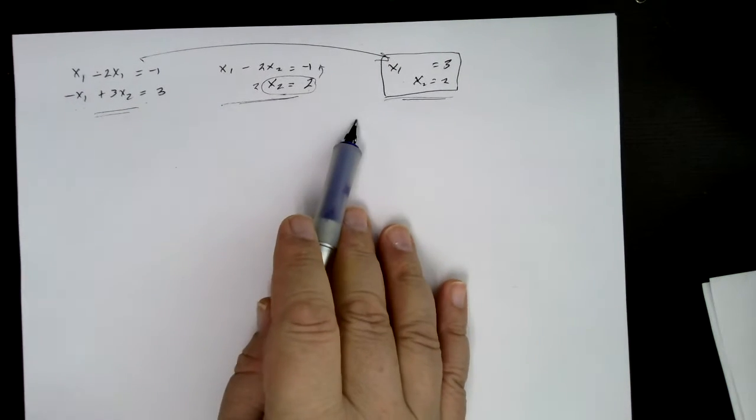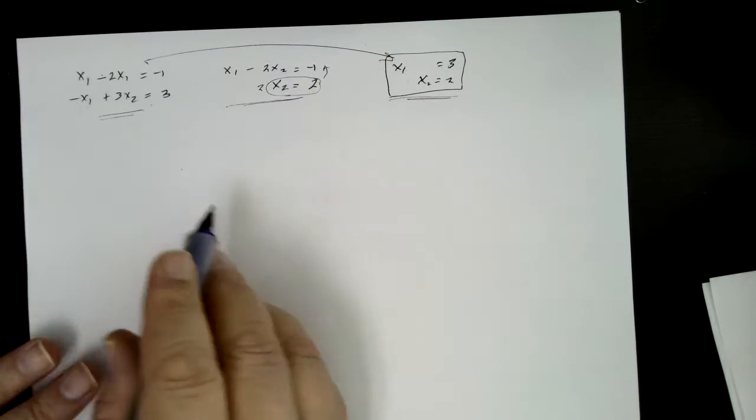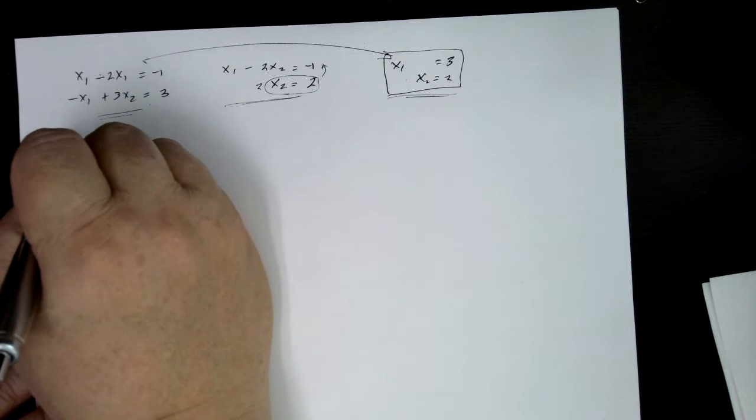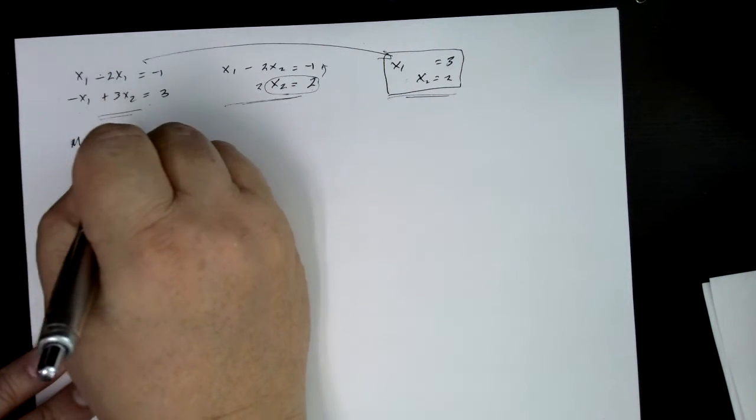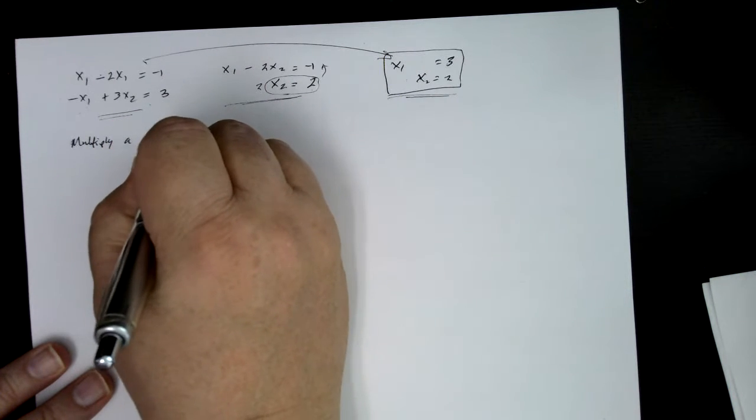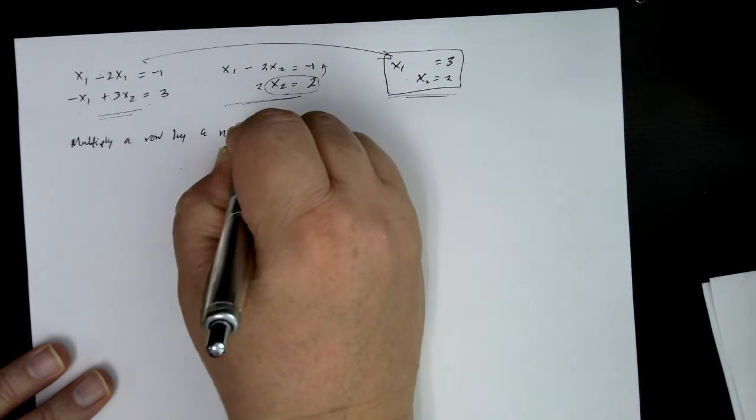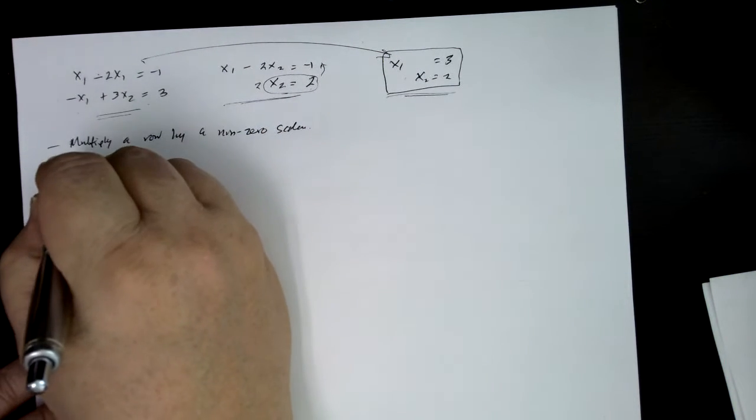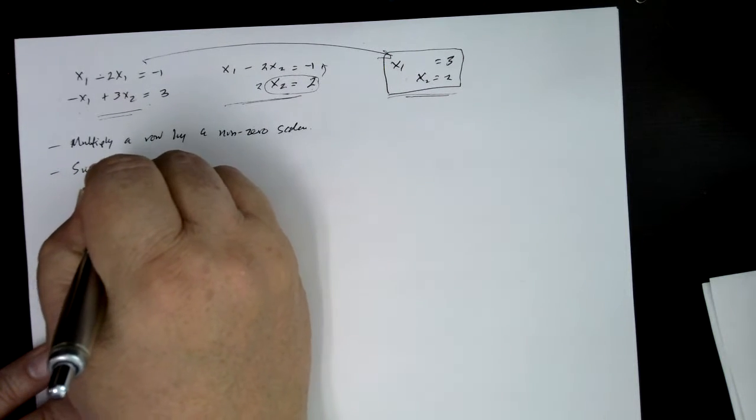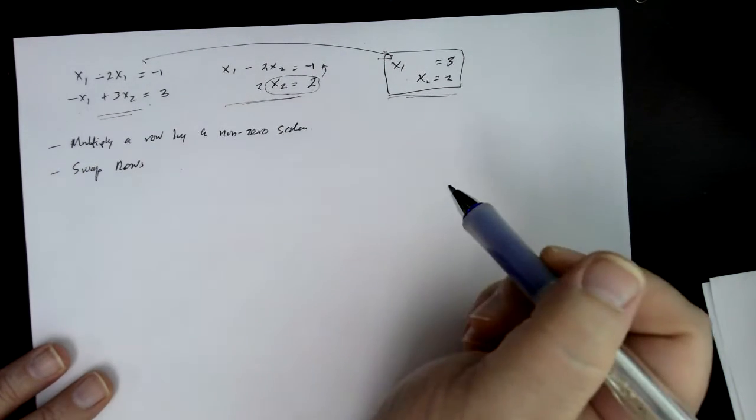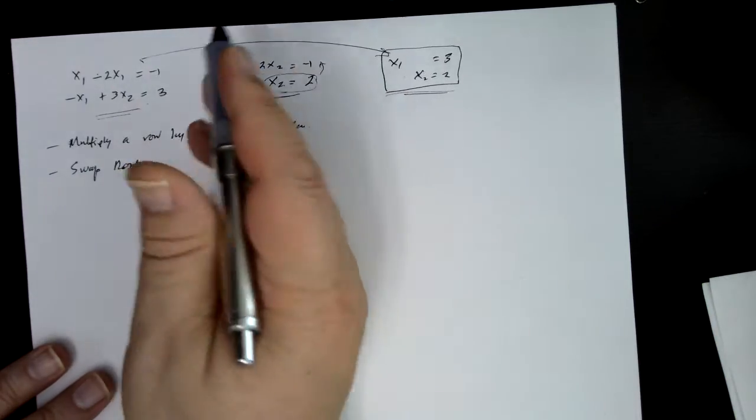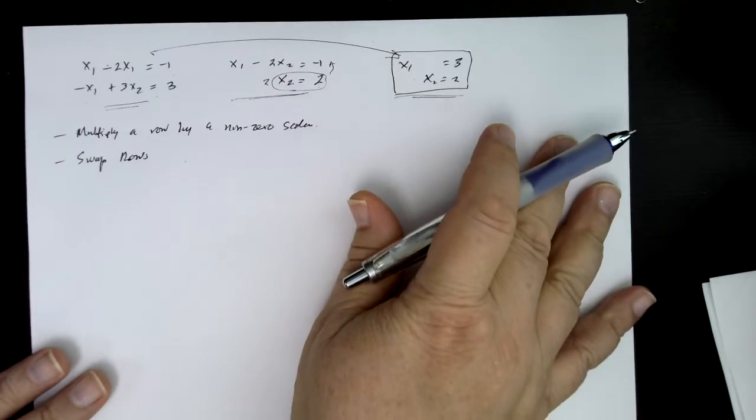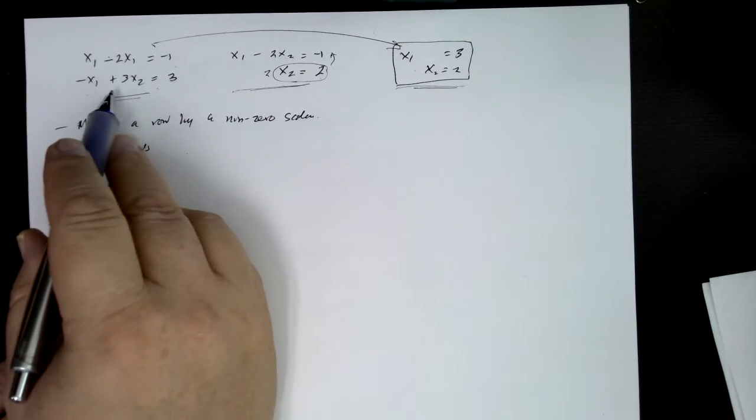So what operations did we use in order to get from here to here? Well, one thing we can do is we can multiply a row by a non-zero scalar. That's valid. And then we can also swap rows. So that's valid. Well, a row being an equation, right? You could have reversed these equations and you would get the same system.